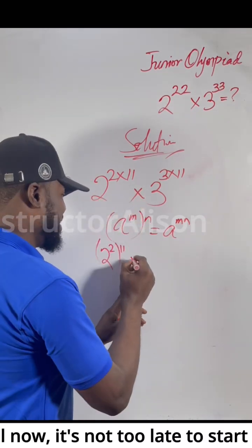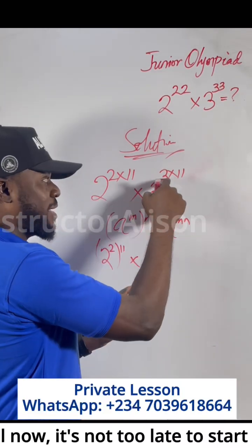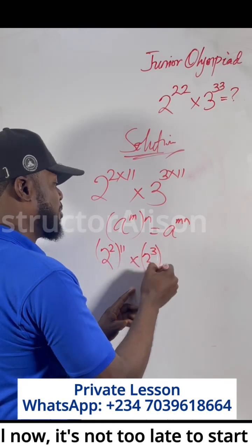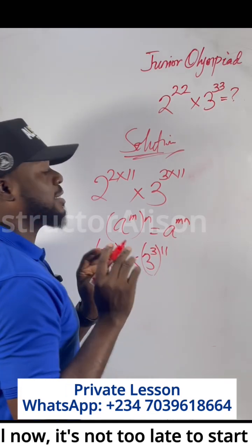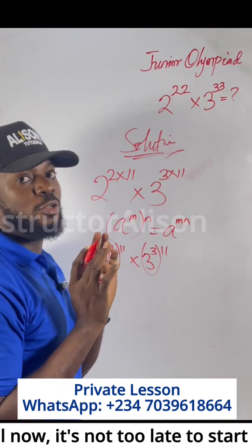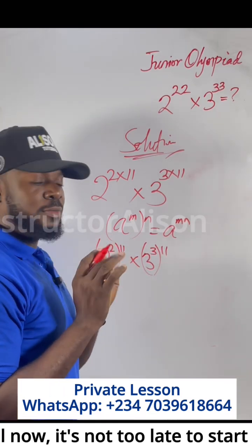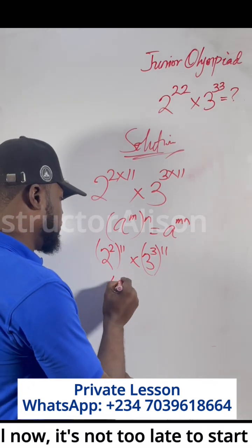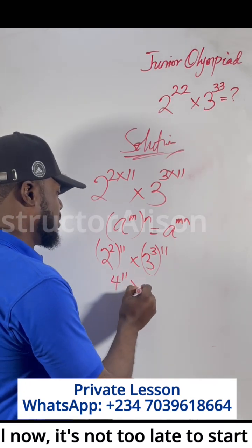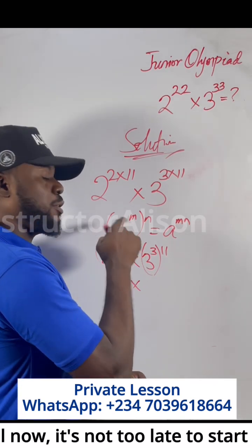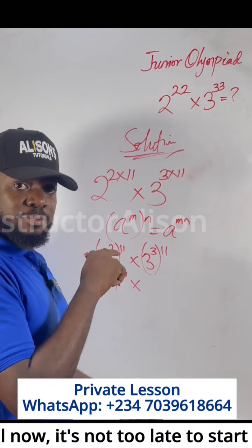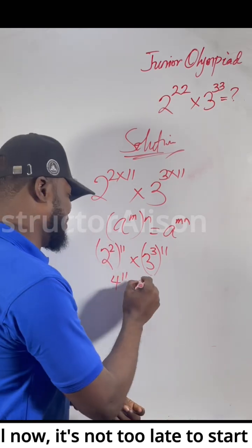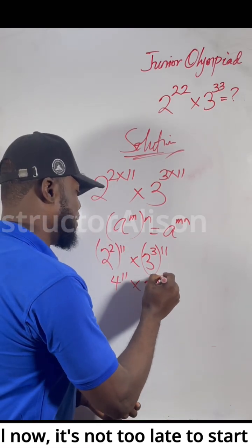For this part, you will put 3 inside and 11 outside. Now what is 2 to the power of 2? That's 4. So you get 4 to the power of 11, times 3 to the power of 3. Now 3 to the power of 3 is 27, because 3 times 9 equals 27. So you get 27 to the power of 11.